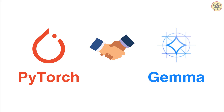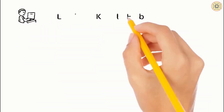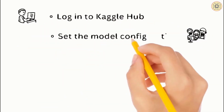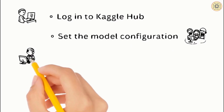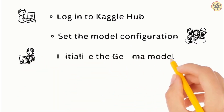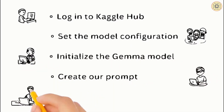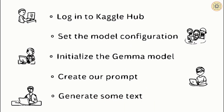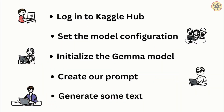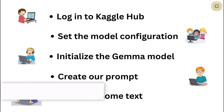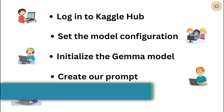Let's take a look at the topics we'll learn. First, we'll log in to Kaggle Hub. Next, we set the model configuration. After that, we'll initialize the Gemma model. And then, we'll create our prompt. Finally, we'll generate some text. Let's go ahead and write code on Colab.